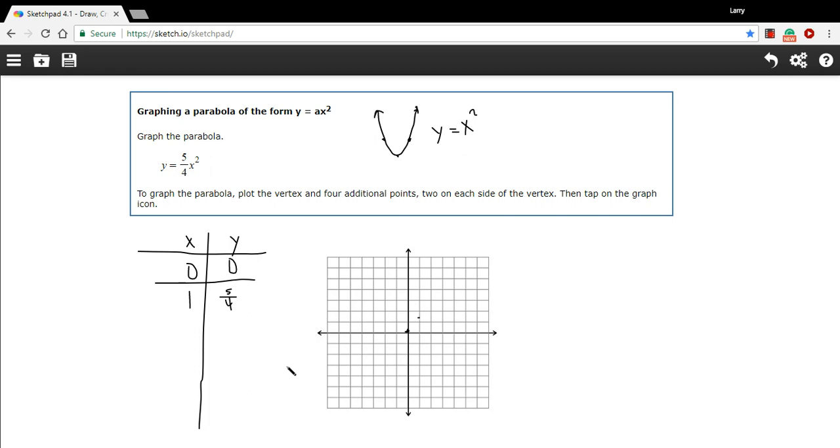Now, if I put in the negative counterpart of this value, a negative 1, I'm going to get the same exact thing. Because negative 1 squared is a positive 1. So we're going to get this point over here, negative 1, 5 4ths.